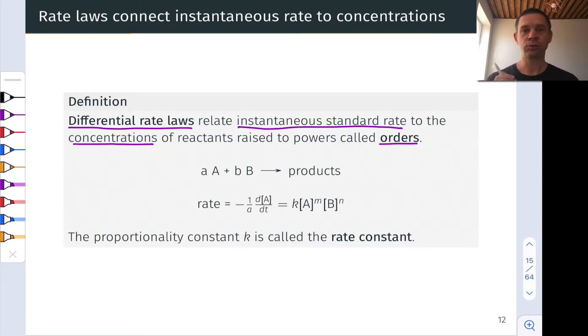The differential rate law for this reaction can be written in general as rate equals a proportionality constant called k times the concentration of A raised to the power m times the concentration of B raised to the power n.